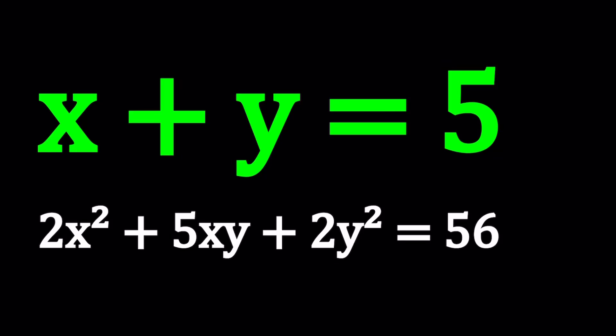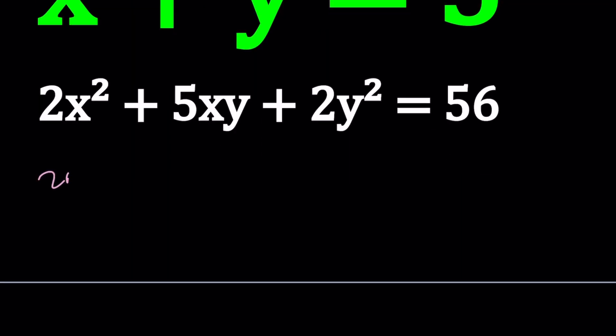Hello everyone. In this video, we're going to be solving a nice polynomial system. We have x plus y equals 5, and 2x² + 5xy + 2y² equals 56. And we're going to solve for x and y values. I'll be presenting two methods, and this time, let's start with the second method.